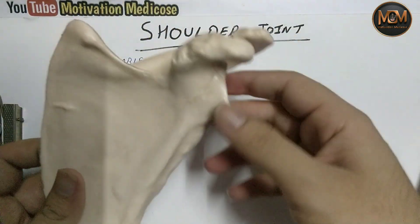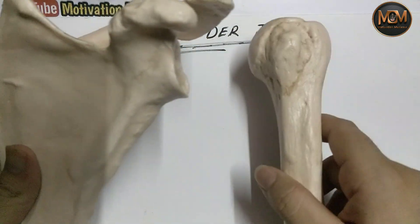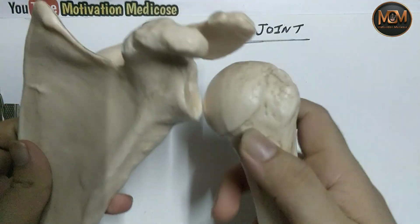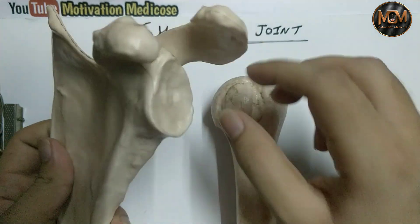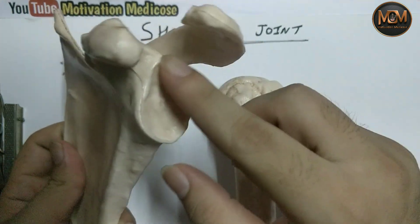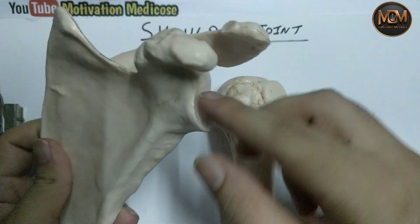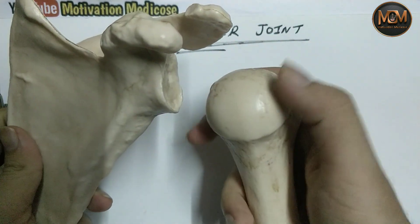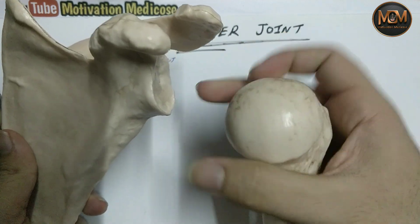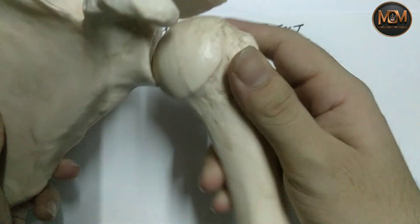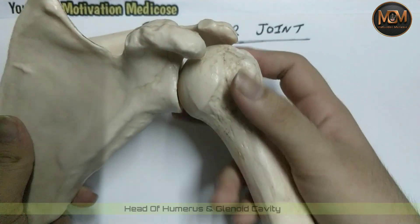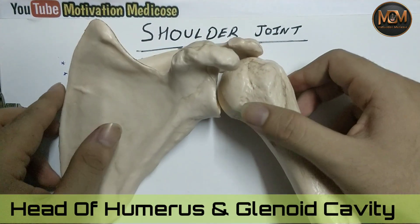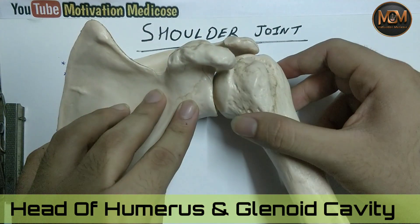This is the scapula and this is the humerus. This joint is formed between the glenoid cavity of the scapula and the head of the humerus — so between the head of humerus and the glenoid cavity, this joint is formed.